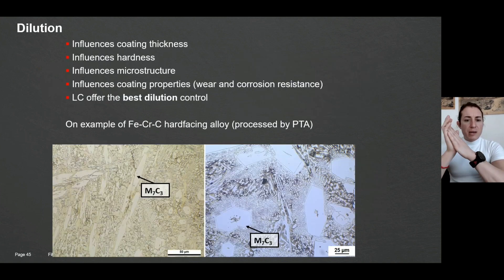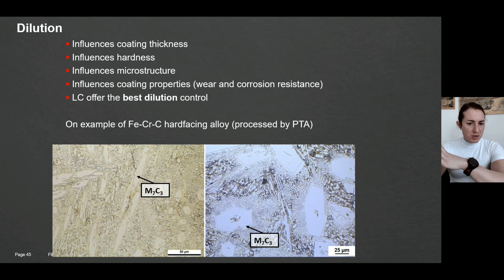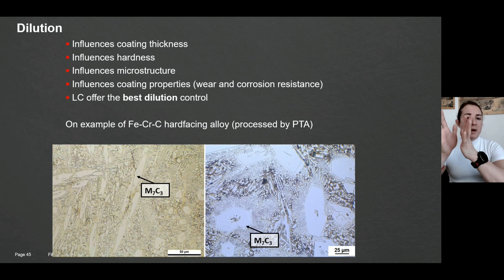Many years ago with my good friend Hans Hornung, at that time he was a PhD student working for Castolin, we together wrote a paper where we have identified the influencing values of dilution on substrate material and on properties of very simple iron-chromium-carbon hard facing by PTA process. We found out that dilution can influence coating thickness, coating hardness and microstructure, and those microstructure changes might be very essential in terms of providing you wear and/or corrosion resistance.